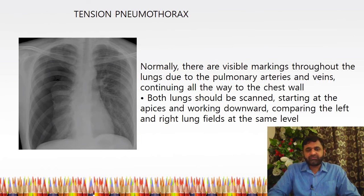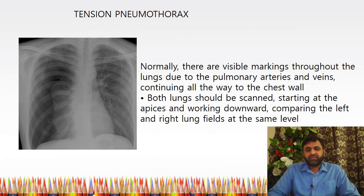Tension pneumothorax: normally, visible lung markings are seen throughout the lungs due to pulmonary arteries and veins, continuing all the way to the chest wall. Both lungs should be scanned starting at the apices, working downwards, comparing left and right lung fields at the same level. This X-ray shows right-sided tension pneumothorax — no markings are visible on the right side, while on the left side normal markings are visible.